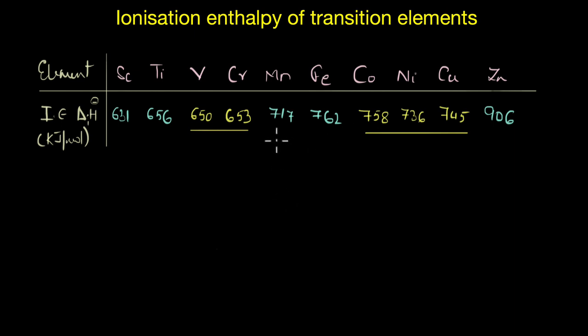In general, although we can say that the ionization enthalpy values increase along a period, the trend as such you can see is erratic or irregular. Further, you can see that in the first series, zinc has the highest ionization enthalpy.